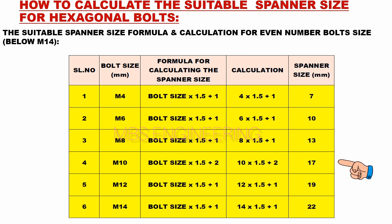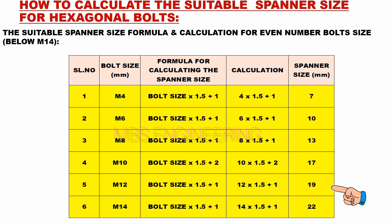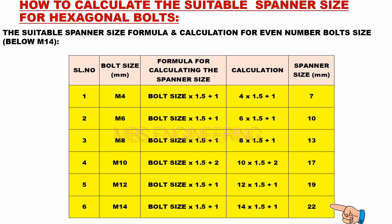The suitable spanner size for bolt size M10 is 17 mm. The suitable spanner size for bolt size M12 is 19 mm. The suitable spanner size for bolt size M14 is 22 mm.